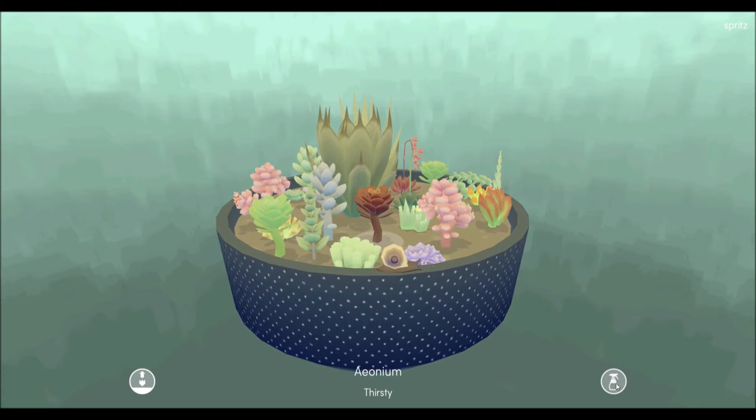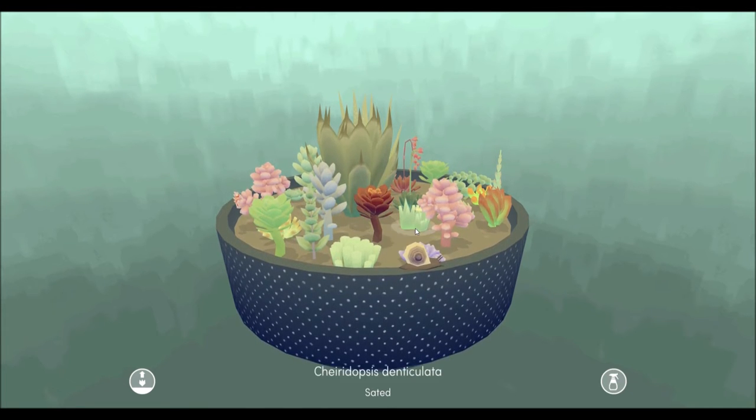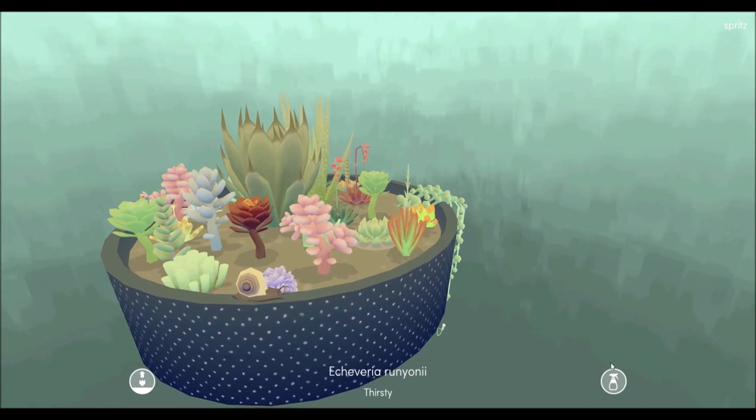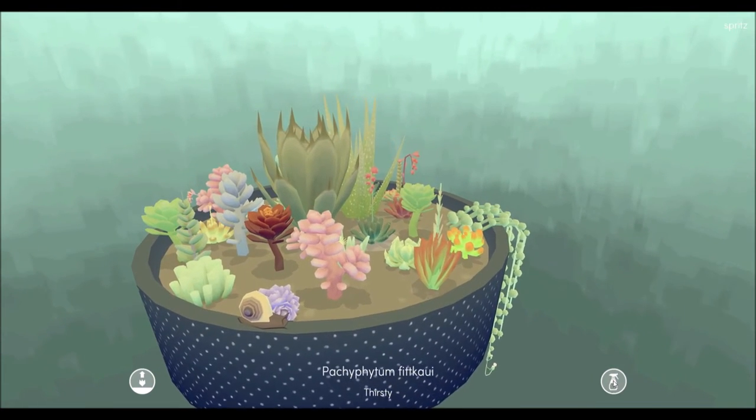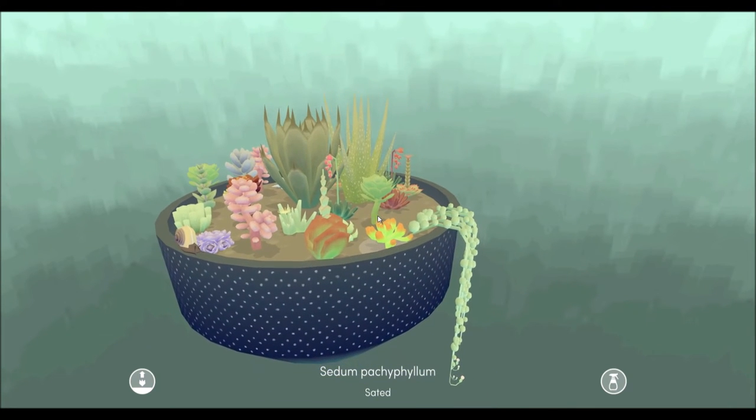But see, this one right here, we're gonna go ahead and spray it. Spray it so it'll be all nice and happy. Look at it's growing its color back. And it'll be overall happy to continue growing. I'm gonna go ahead and just go around and water whichever succulents need watering.